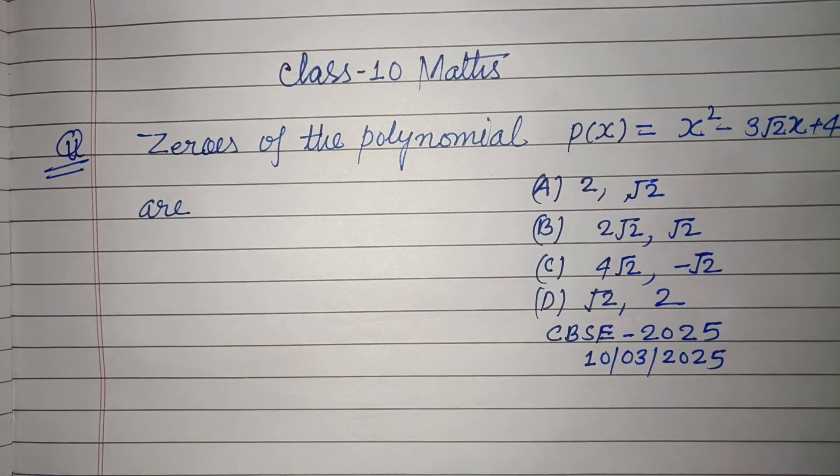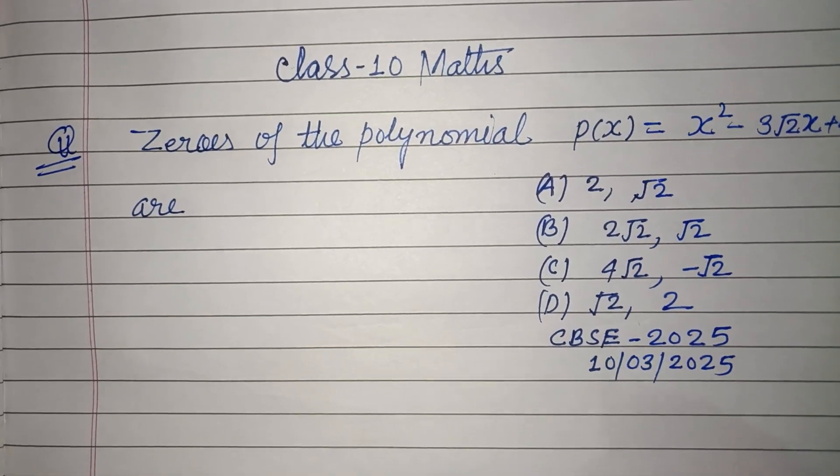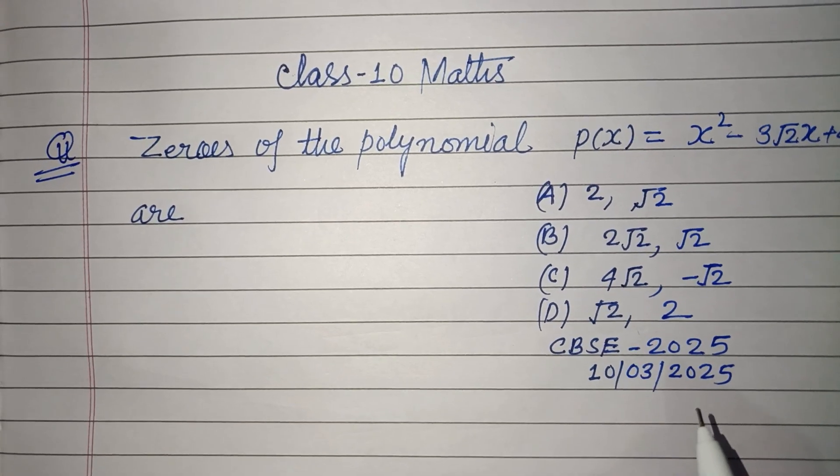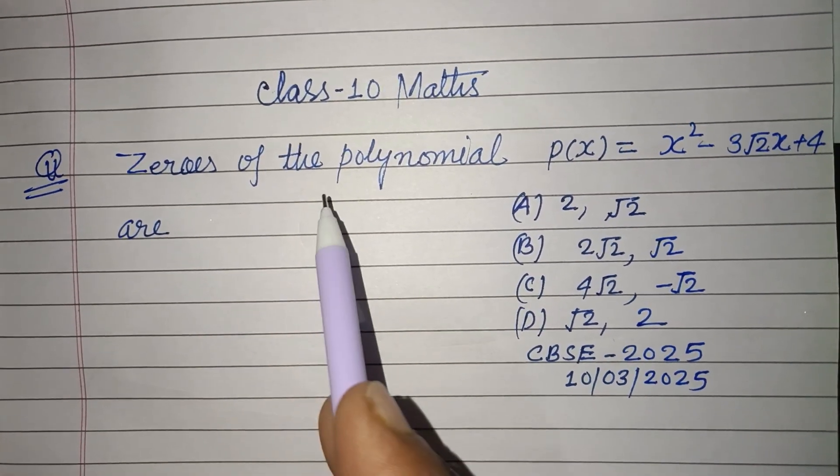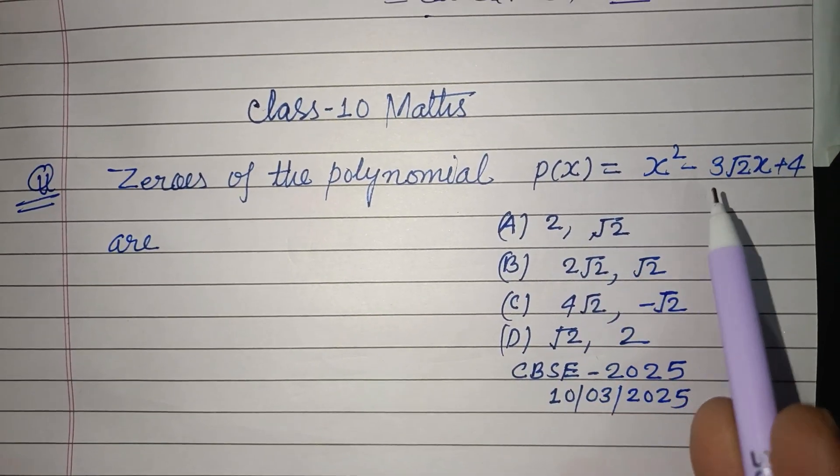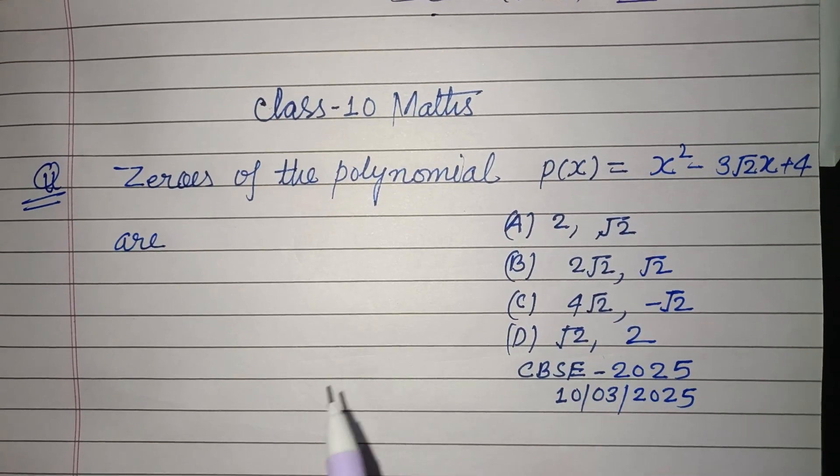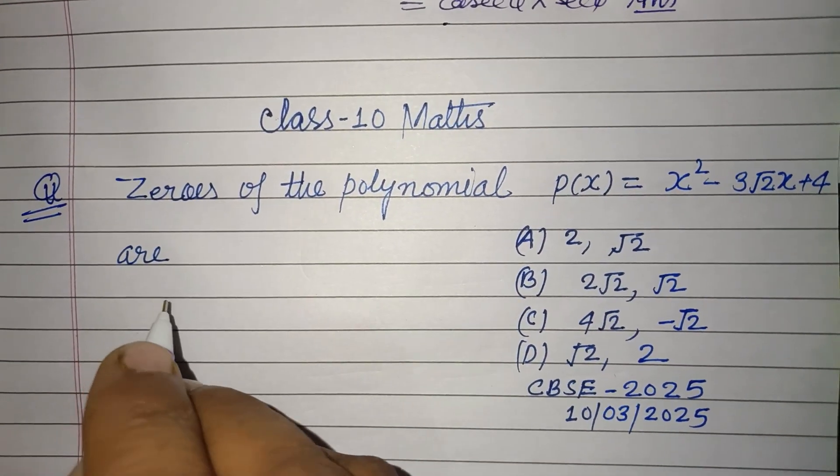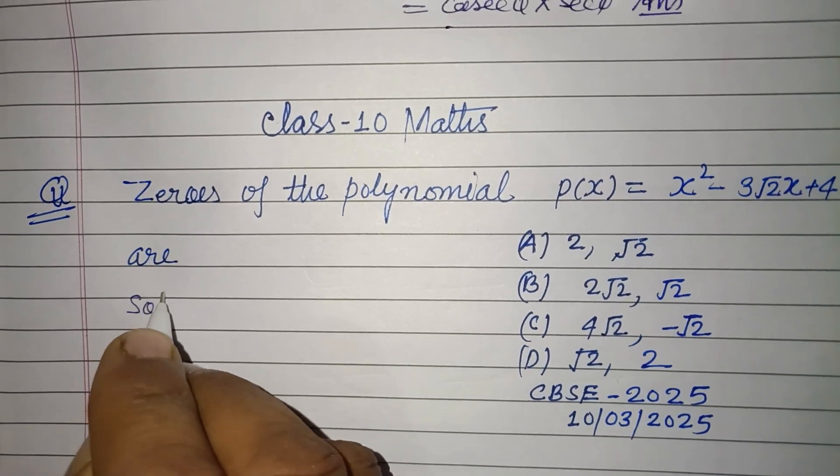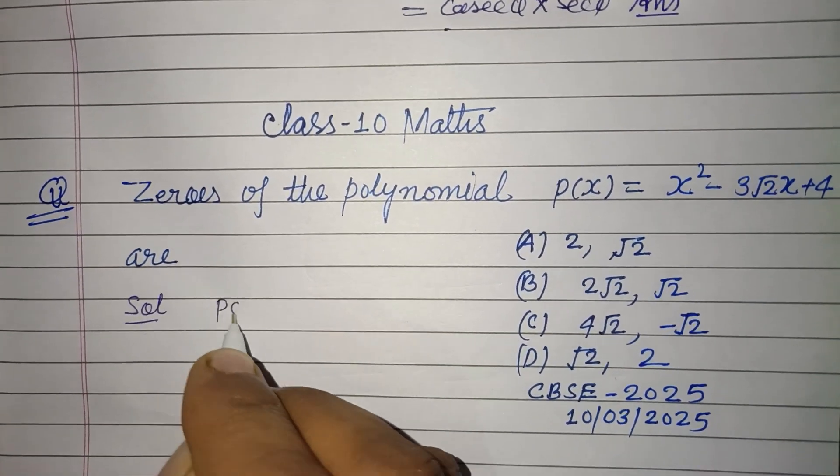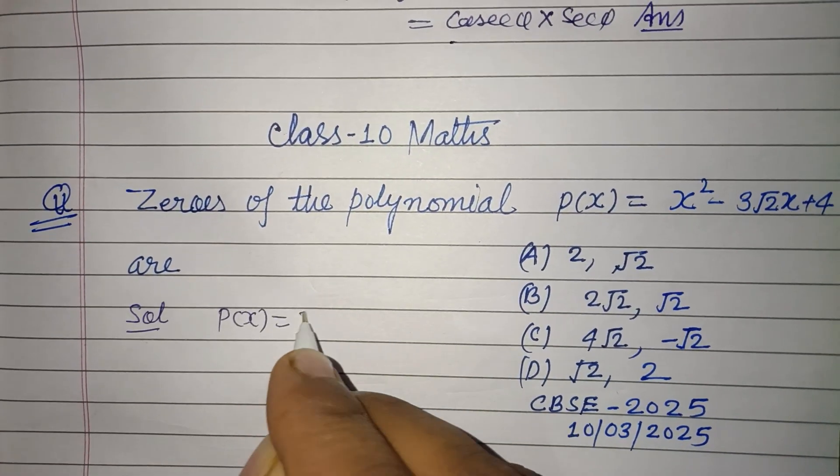Hello viewers, warm welcome to this YouTube channel. Question from CBSE board exam 2025: Zeros of the polynomial p(x) = x² - 3√2x + 4 are... Given polynomial is p(x) = x² - 3√2x + 4.